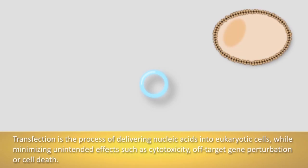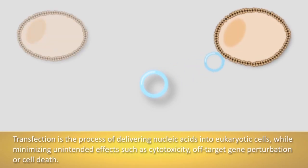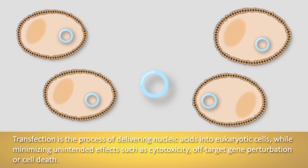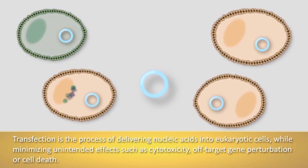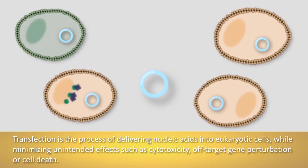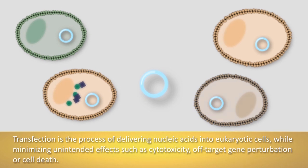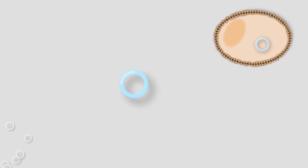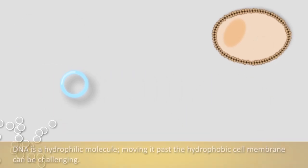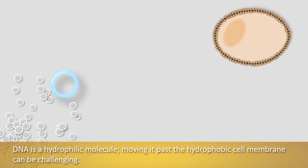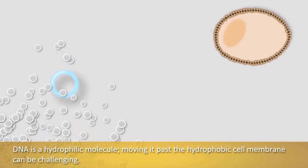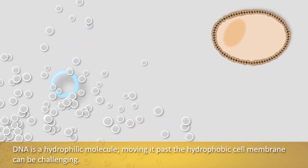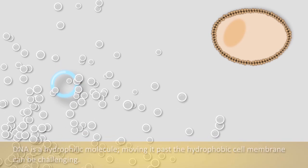Transfection is the process of delivering nucleic acids into eukaryotic cells while minimizing unintended effects such as toxicity, off-target gene perturbation, or cell death. Because nucleic acids are hydrophilic molecules and the cell membrane is hydrophobic, coaxing DNA past the membrane can prove challenging.